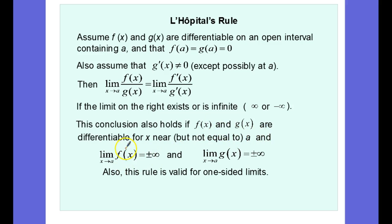And if we get the limit of f(x) approaches plus or minus infinity and the limit as x approaches a of g(x) is plus or minus infinity, then we can still make use of this rule. So in other words, our indeterminate forms here are going to be 0 over 0 and plus or minus infinity over plus or minus infinity.